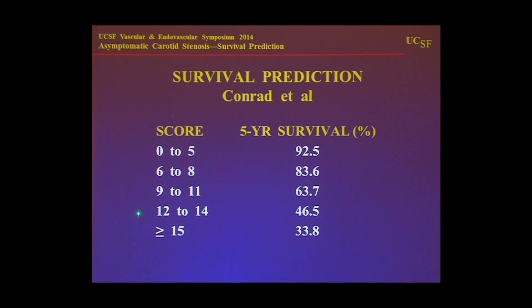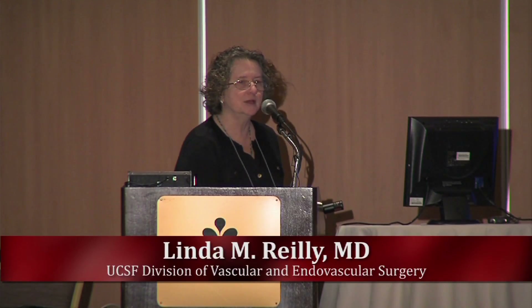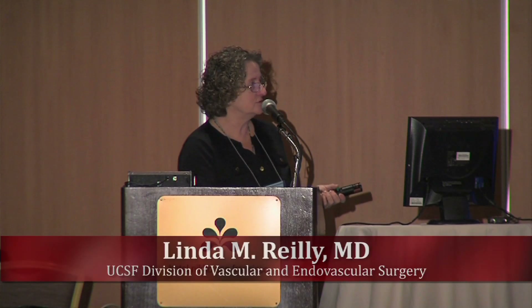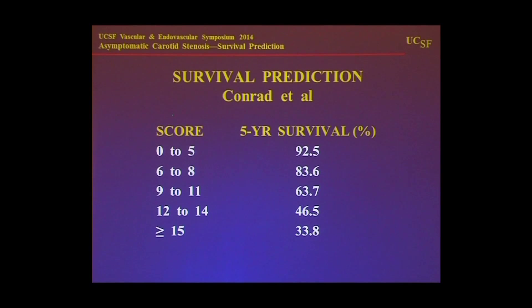You might say to yourself: I know where I'm drawing my line. But if you draw it at a certain point, you have to consider that one out of every two patients you would say no to — on the basis of their predicted likelihood of surviving five years — would actually survive that five years. So that might not be the best system for justifying your decision to deny treatment.